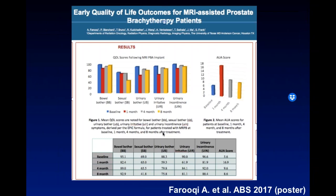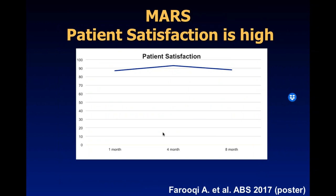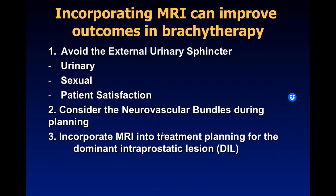Early quality-of-life outcomes for MRI-assisted radiosurgery were presented by Dr. Farocchi, showing AUA score at baseline of approximately 6, rising to about 8 at eight months. Patient satisfaction exceeded 90% overall at four months, with over 90% of patients extremely satisfied at eight months. Incorporating MRI improves brachytherapy outcomes by avoiding the external urinary sphincter, improving urinary and sexual function, and managing the dominant intraprostatic lesion that drives the biology.